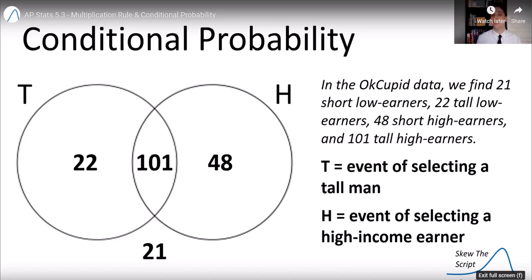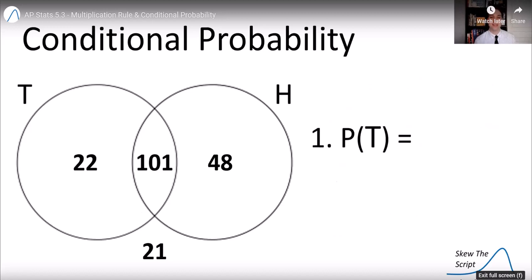Let's make event T the event of randomly selecting from that pool a tall man. Event H the event randomly selecting a high income earner. We can put it in the Venn diagram like this.